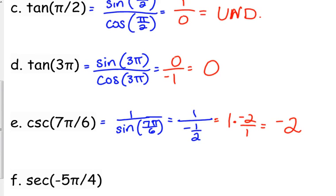Secant. Secant goes with cosine. Now, here's another negative angle. Negative 5 pi over 4. So on your unit circle, look for positive 5 pi over 4. That is also in the third quadrant.